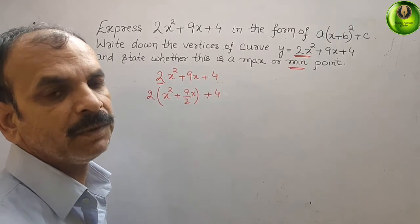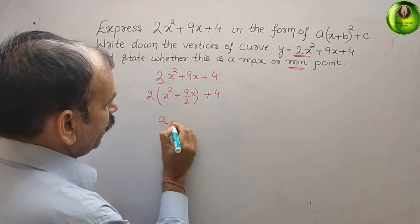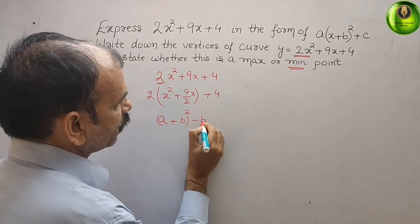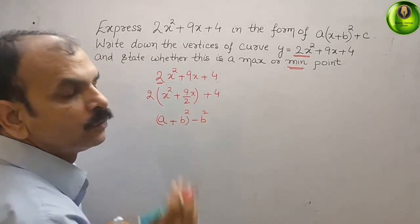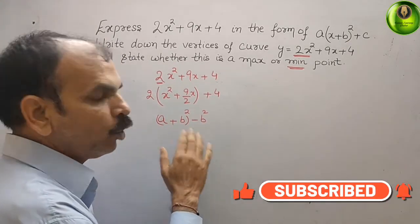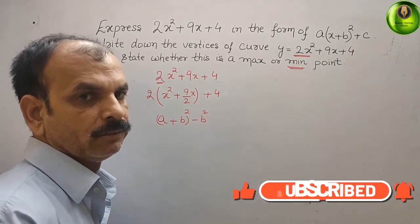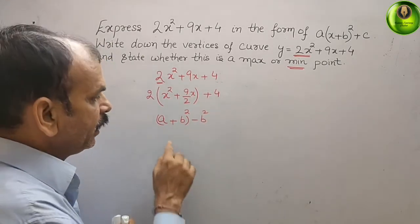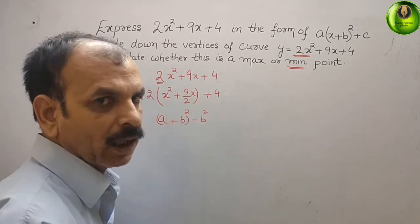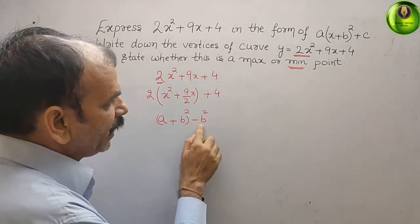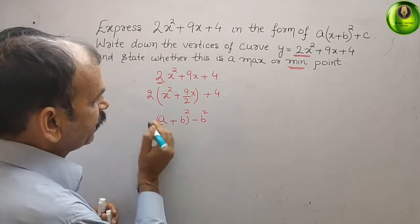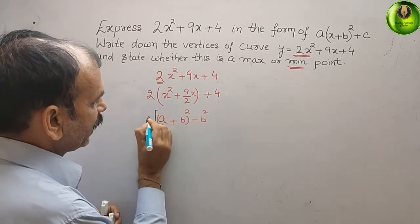Now we will complete the square using the identity (a + b)² − b². Whatever you have in the middle term is positive, so we use a plus b form. We know that expanding (a + b)² gives an extra b² term, which is why we subtract it. They have given 2 as the coefficient, so we write accordingly.